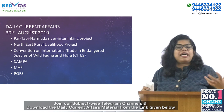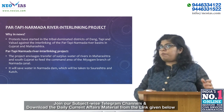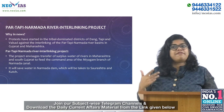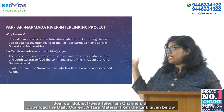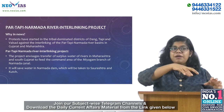Coming to the first topic, the Par Tapi Narmada River Interlinking Project. This is in news because protests have started in the tribal-dominated districts of Dharm, Tapi and Valsad — in the Par Tapi Narmada River Basin in Gujarat and Maharashtra. This project is basically to transfer the surplus water of rivers in Maharashtra and South Gujarat to the Miyagam branch of the Narmada Canal.